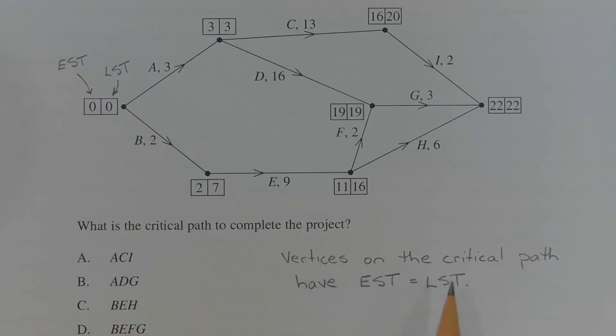Vertices that are on the critical path have the earliest start time equal to the latest start time. We're looking for vertices where the first number is equal to the second number. Those vertices will be on the critical path.